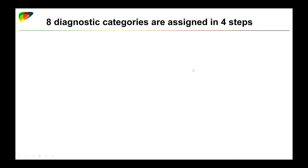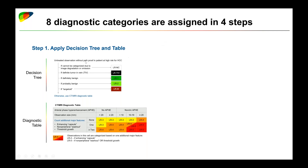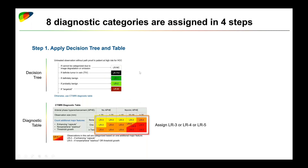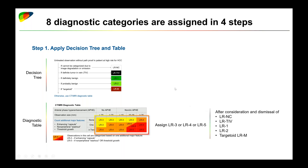Let's start with an overview of the CTMR diagnostic algorithm. We have eight diagnostic categories, which are assigned in four steps. Step one is to apply the decision tree and the table, going step-wise from top to bottom considering all of these categories. Once we dismiss all of these categories, we proceed to assigning LR3, LR4, or LR5 category based on the diagnostic table. Remember that we apply the table only once we consider and dismiss all the categories listed in the decision tree.